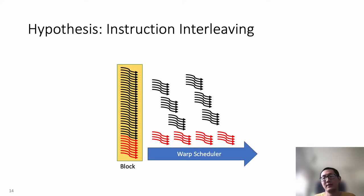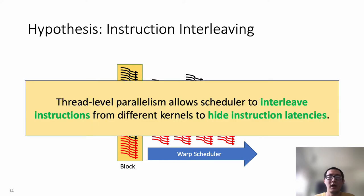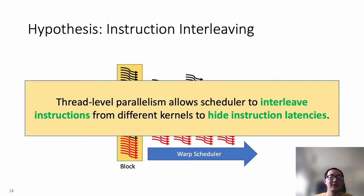On the other hand, horizontal fusion fuses two kernels into one kernel and allows a warp scheduler to interleave instructions from two different kernels. Having instructions requesting different hardware resources in a kernel is beneficial because it tends to increase the number of eligible warps for the scheduler. But implementing horizontal fusion still requires us to solve two practical challenges.